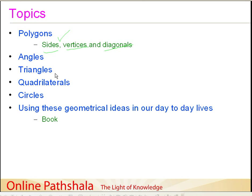Then we move ahead to understand the very important geometrical concept of triangles. Tri means three and angles means angle, so three angles — we will see what interesting properties triangles have, covering it briefly for now. Then we understand what we mean by quadrilaterals and the basic terminologies associated with them. We then continue our discussion on circles: what we mean by circles and the various concepts we need to understand when discussing circles.